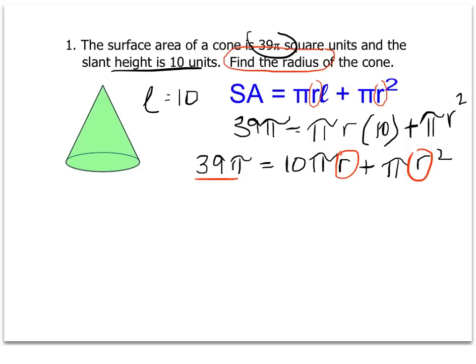We see that we have three terms here. 39 pi, 10 pi r, and pi r squared. What is common to each of those three terms is, of course, pi. Each of them has pi in it, so I can cancel that out.